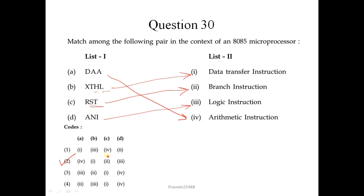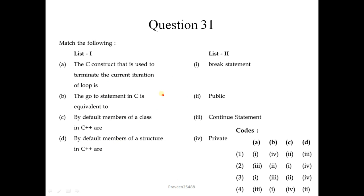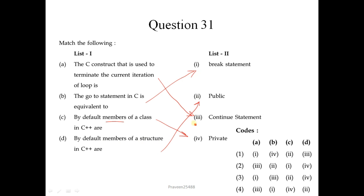Question number 31 - match the following. The C construct used to terminate the current iteration of a loop is the continue statement. The goto statement in C is equivalent to... By default, members of a class in C++ are private. By default, members of a structure in C++ are public. So the sequence is 3-1-4-2, and the correct answer is option 4.